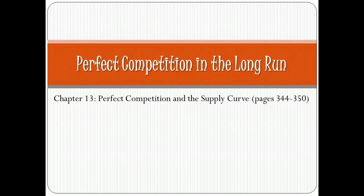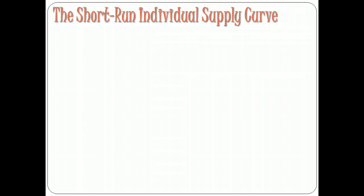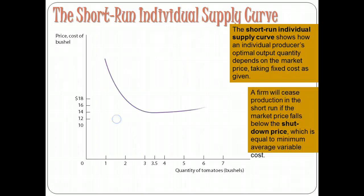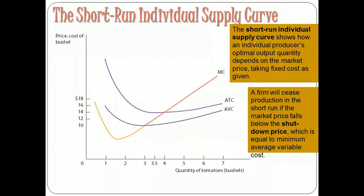If we want to talk about the market supply curve, we need to start by looking at the individual firm's supply curve. The short-run supply curve for an individual firm is what will help determine the optimal output for that firm. So we look at our costs — our average total costs, average variable costs, and marginal costs — and we'll see where the marginal revenue curve crosses the marginal cost curve. Where it crosses will determine whether or not we operate in the short run.